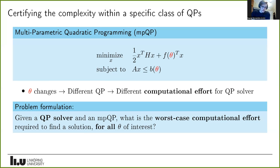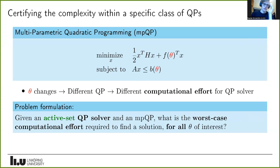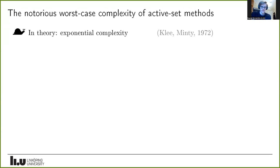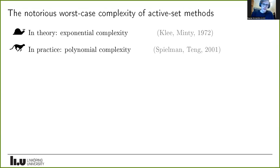The main problem formulation we're interested in is: given a QP solver and a multi-parametric quadratic program, what is the worst-case computational effort required to find a solution for all parameters of interest? We focus on active set QP solvers. When I say 'active set solvers and worst-case complexity,' some familiar with this topic might shudder — it's notorious. A famous result by Klee-Minty shows worst-case complexity is exponential, demonstrated for the simplex method. However, in practice things are more optimistic, often showing polynomial complexity. We want to close this gap.